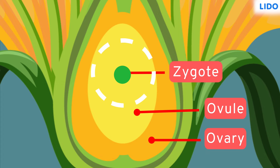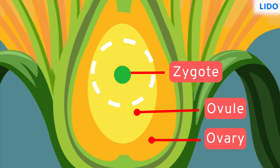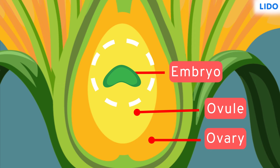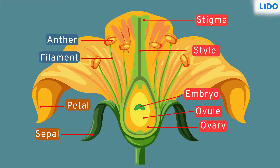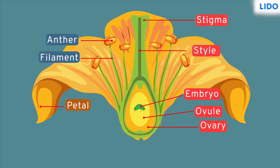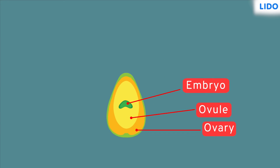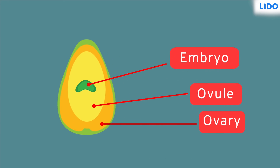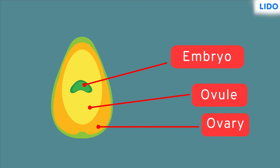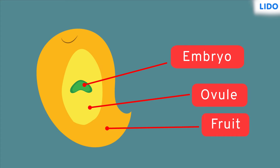The zygote rapidly divides to form an embryo. As the embryo grows, the flower sheds the sepals, petals and other parts except the ovary. The ovary develops as fruit and the ovules inside the ovary develop as seeds.